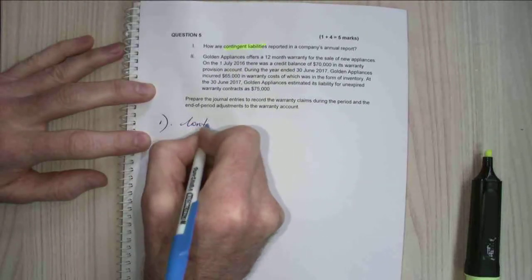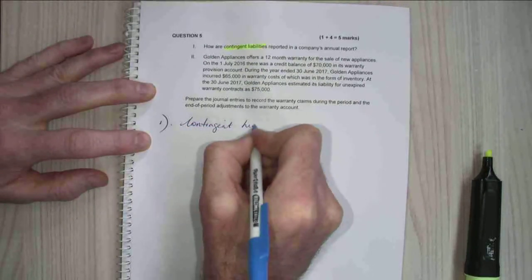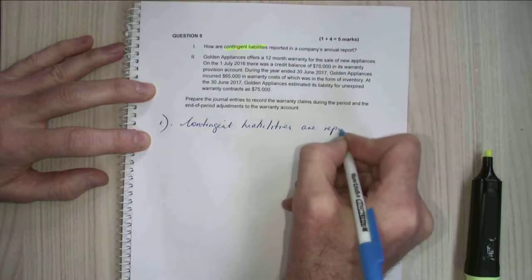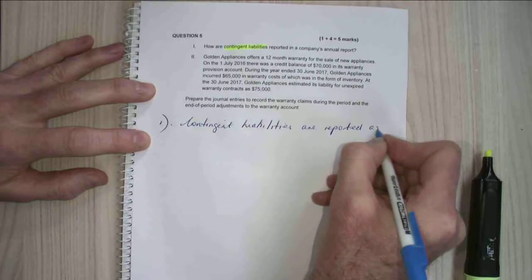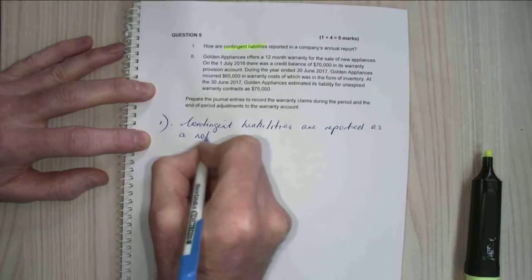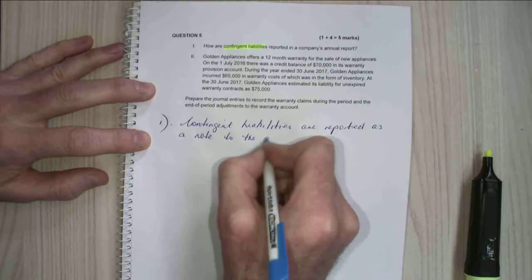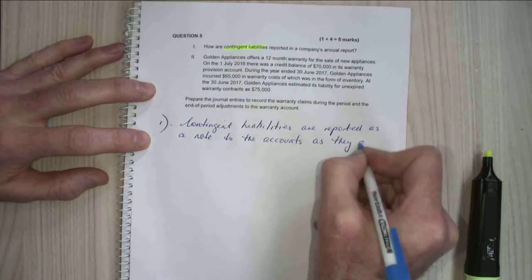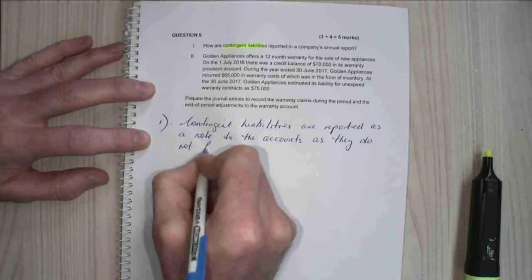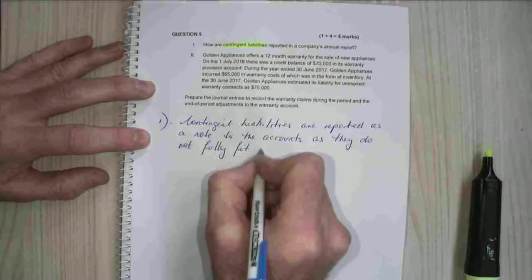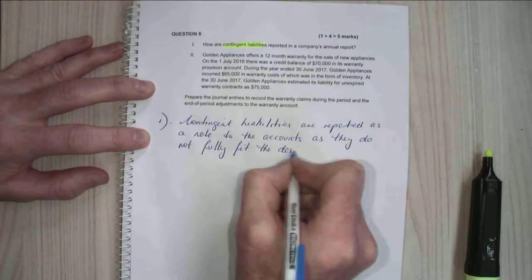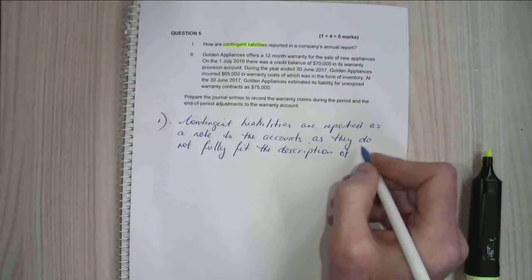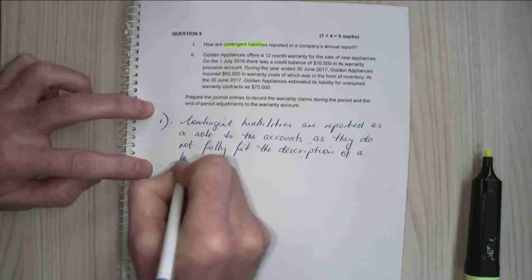Well, contingent liabilities are reported as a note to the accounts. And they do not fit the definition of a liability. So they do not fit the definition of a liability.